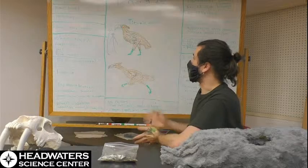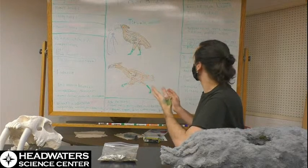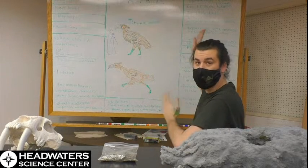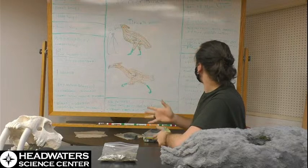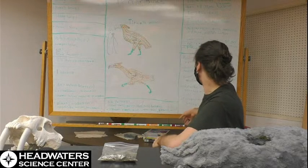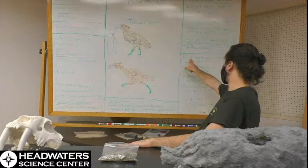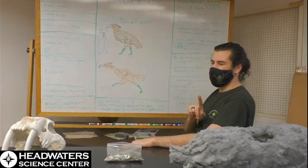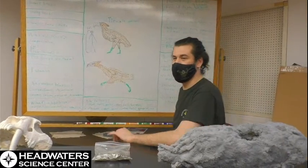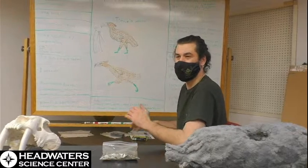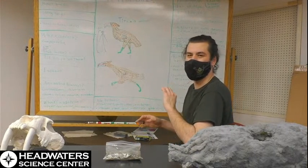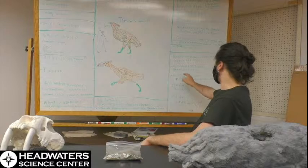So back on terror birds. Generally with these, these would also be called phorusrhacids. And there are five families of them. So we have the Brontornithinae. Again, my Latin is terrible. I am very sure my ornithology professor, if she's watching, is incredibly disappointed in me.